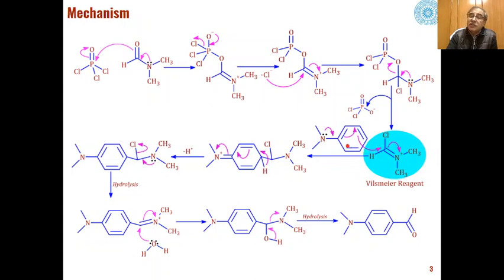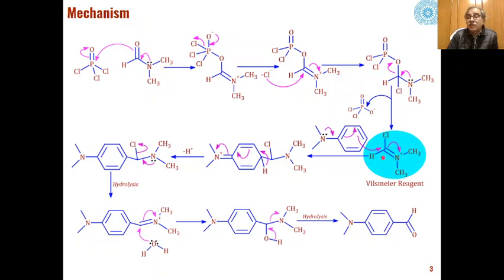The Vilsmeier reagent is then attacked by the aromatic system, which is rich in electron density. The electron-donating group on the aromatic ring shares its lone pair with the aromatic system. Because of the positive charge on nitrogen, by inductive effect this carbon acts as an electropositive part — it is an electrophilic carbon due to the adjacent positively charged nitrogen — and the aromatic system attacks this electrophile, forming an intermediate.